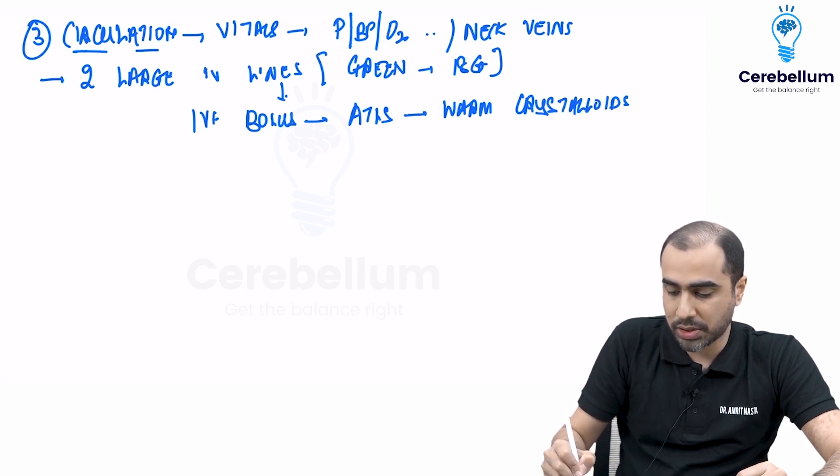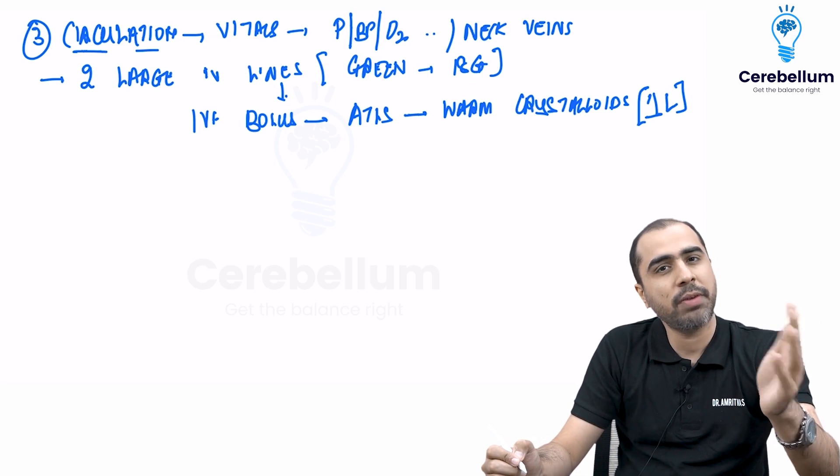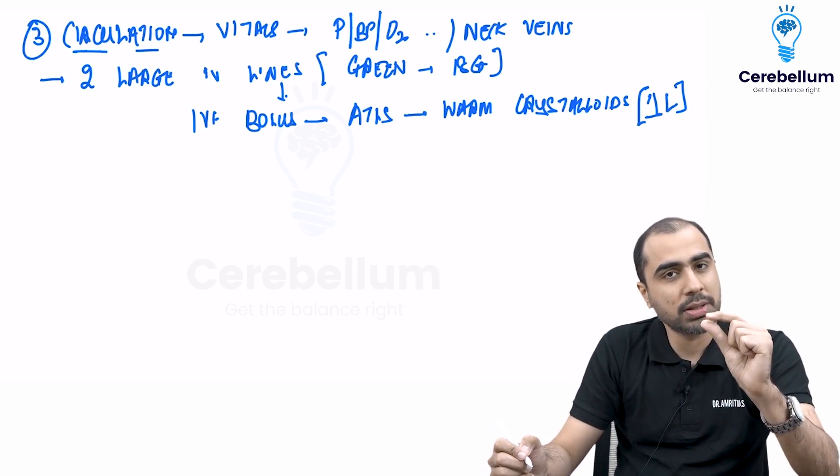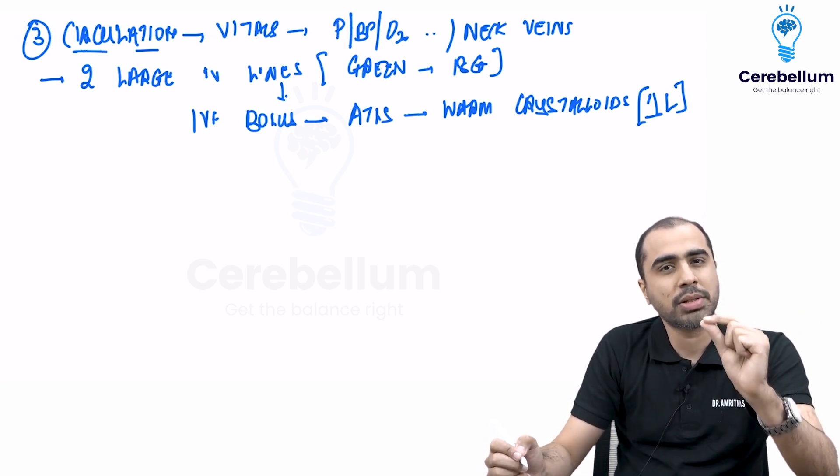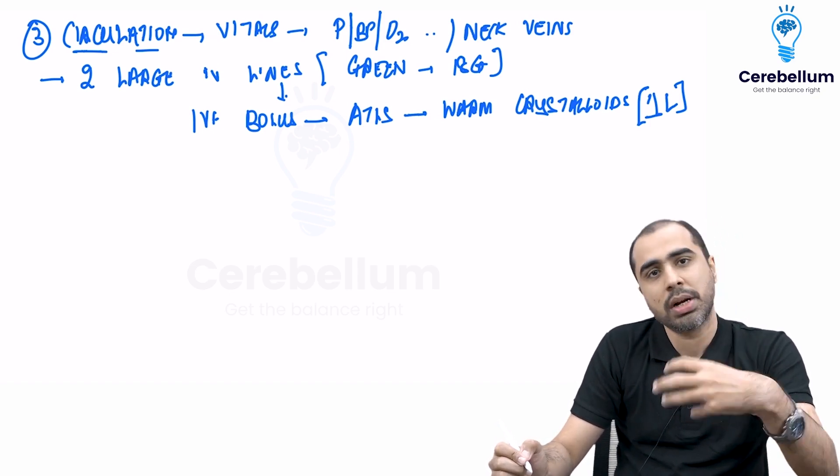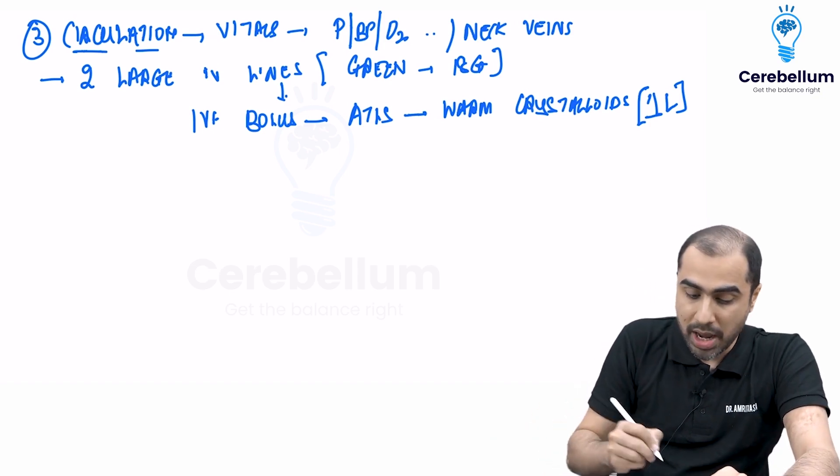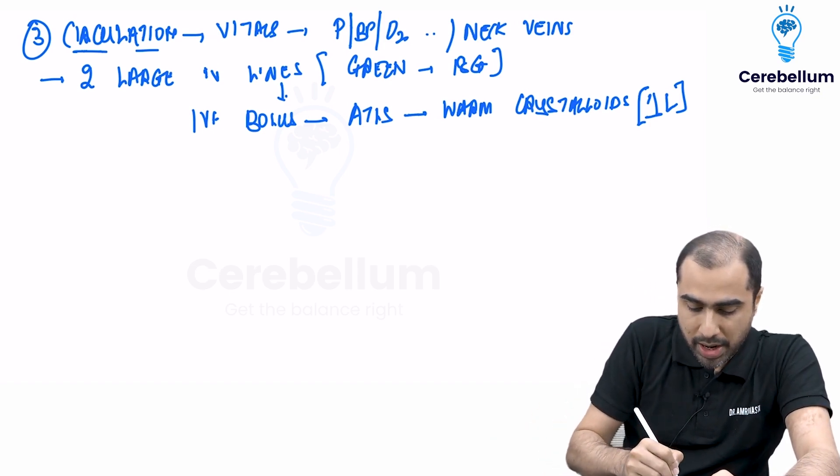You are supposed to give warm crystalloids, one liter. One liter of warm crystalloids. The earlier ATLS said 1.5 to 2 liters, but now the principle has become limited crystalloid use. You give up to one liter of IV fluid bolus depending on the severity of hypovolemia if I am expecting or anticipating profound blood loss.